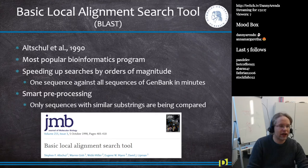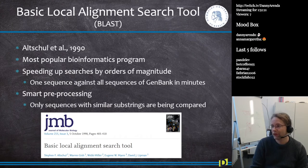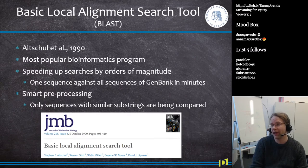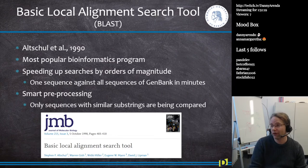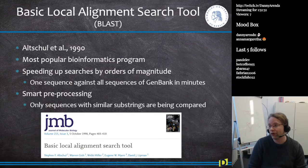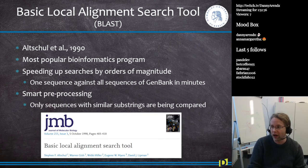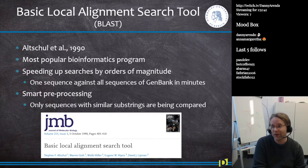Fun fact: the Journal of Molecular Biology has an impact factor of only five, yet the BLAST paper — used by millions of people every day — was published there. A reminder that not everything in Nature is great, and great things can be published in low-impact journals.